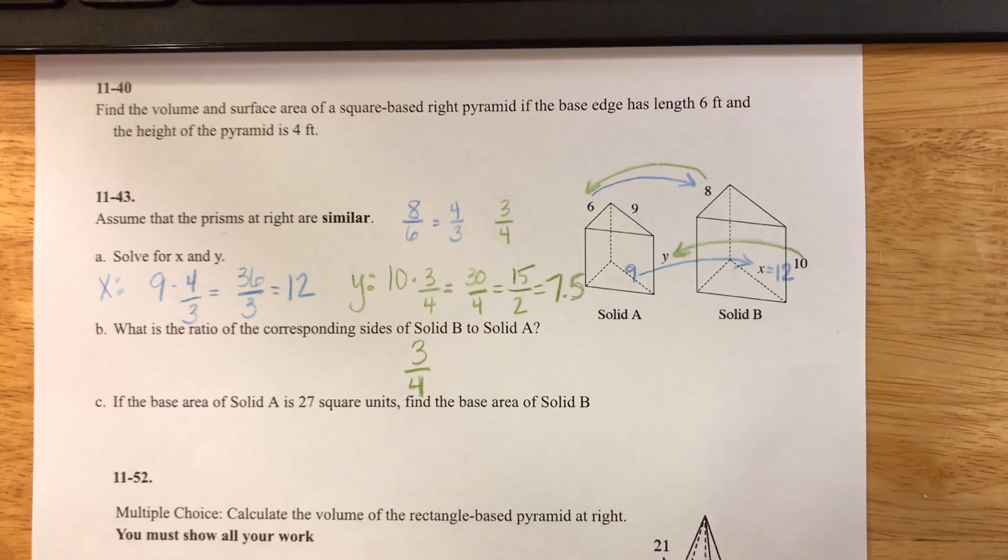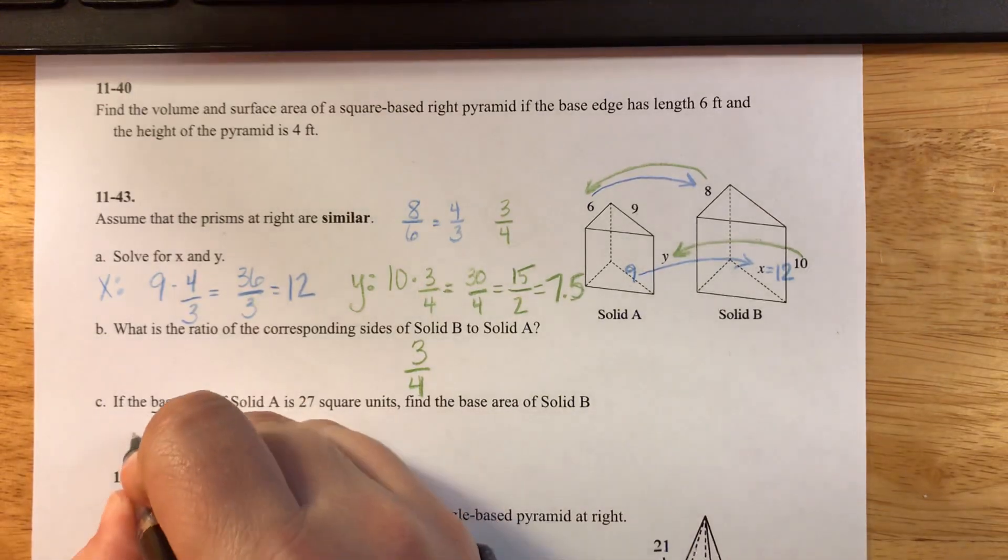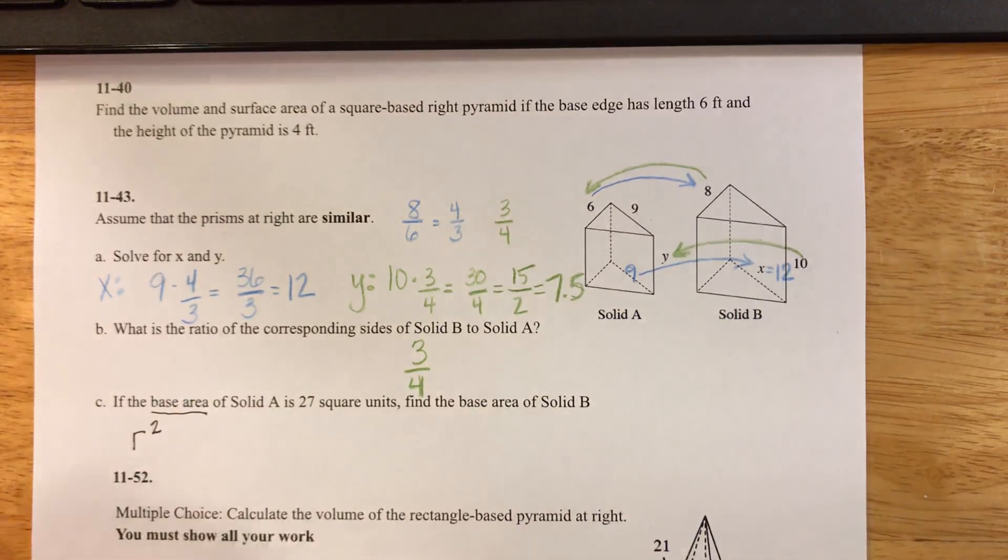Now let's talk about the base area. Remember, anytime we're talking about areas, we're going to use our zoom factor and we're going to square it because an area has two dimensions, a length and a width. That means I multiplied by the zoom factor once for the length and once for the width, so I'm multiplying it by it squared.